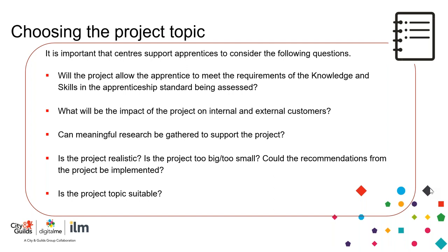Can the project recommendations be implemented, and is the project topic suitable? If the project is implemented but wasn't fully successful, that doesn't necessarily mean the learner will fail the project method of assessment. It's about the feedback from that project — why did it fail or why wasn't it completely successful? If the learner feeds back accordingly and puts forward what they would do differently in future, that is acceptable. But the project must be implemented — that's the key.